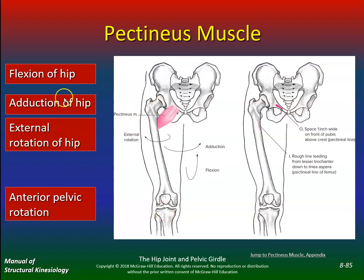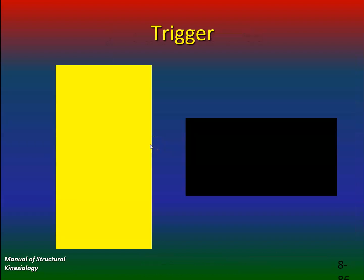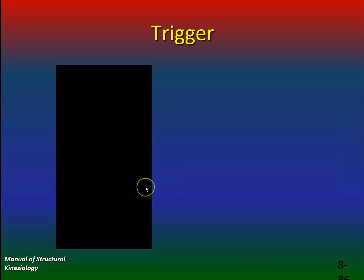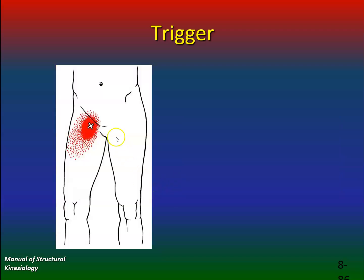Pectineus muscle: flexion of the hip, adduction of the hip, external rotation of the hip. You might get some groin pain right in here from pectineus trigger points.